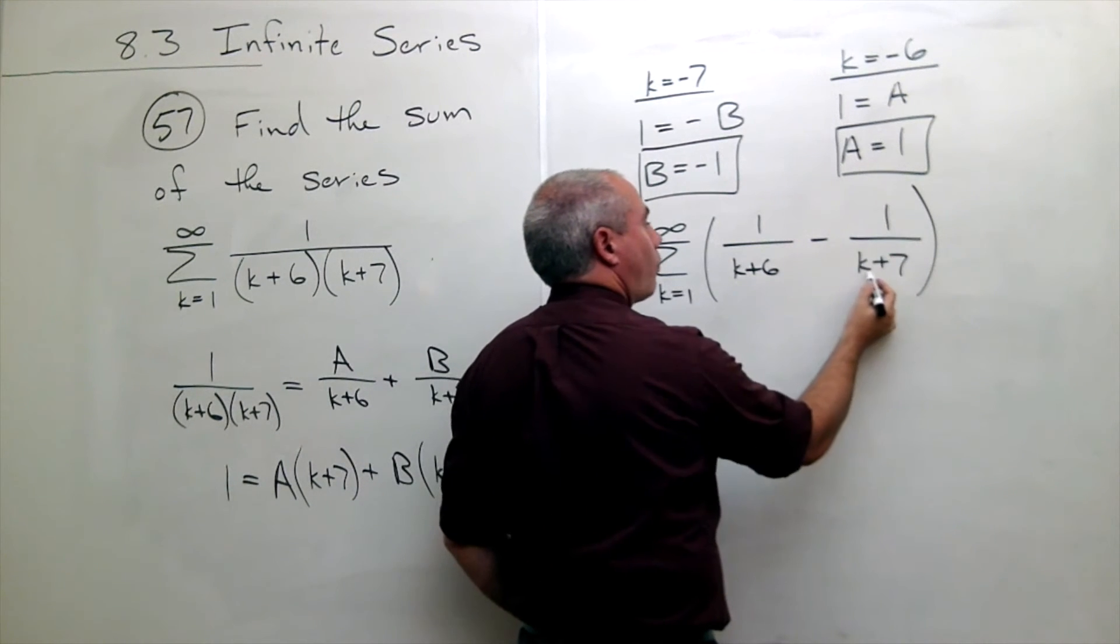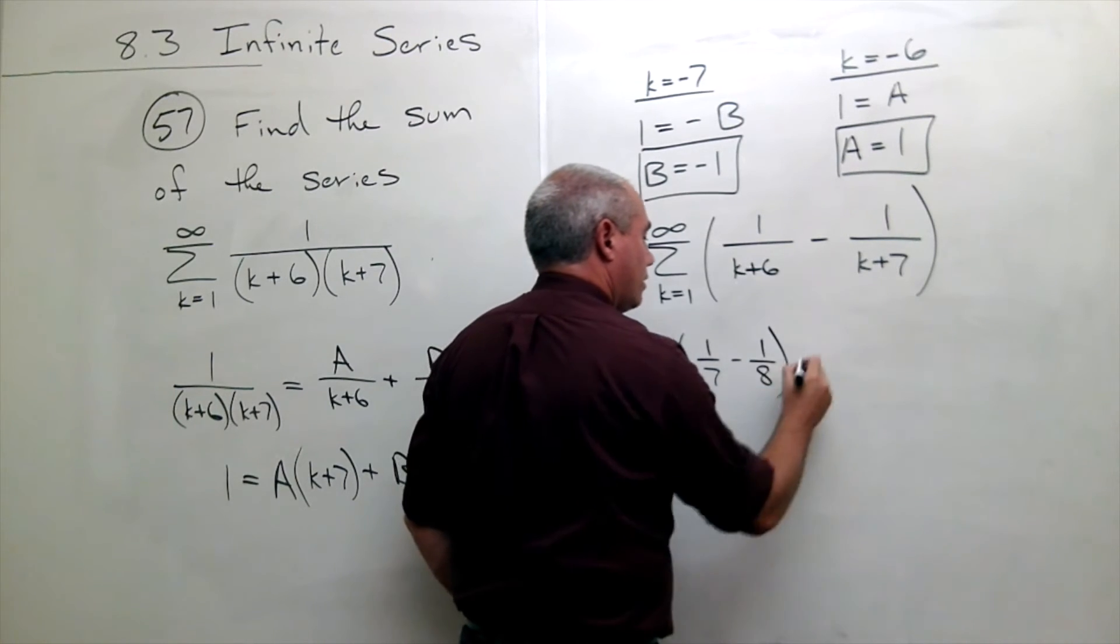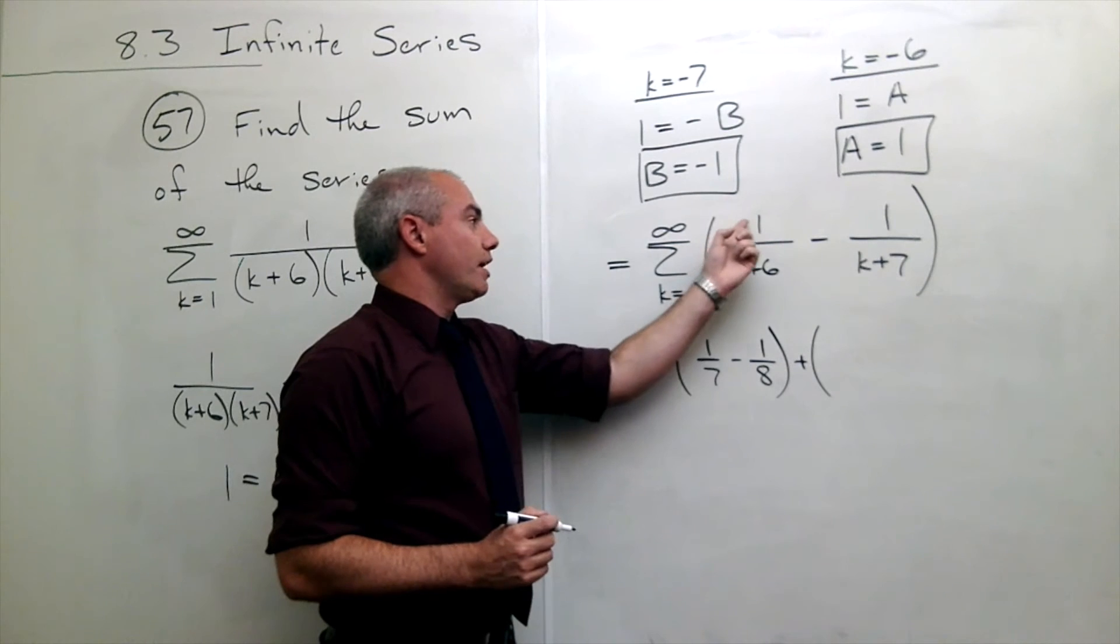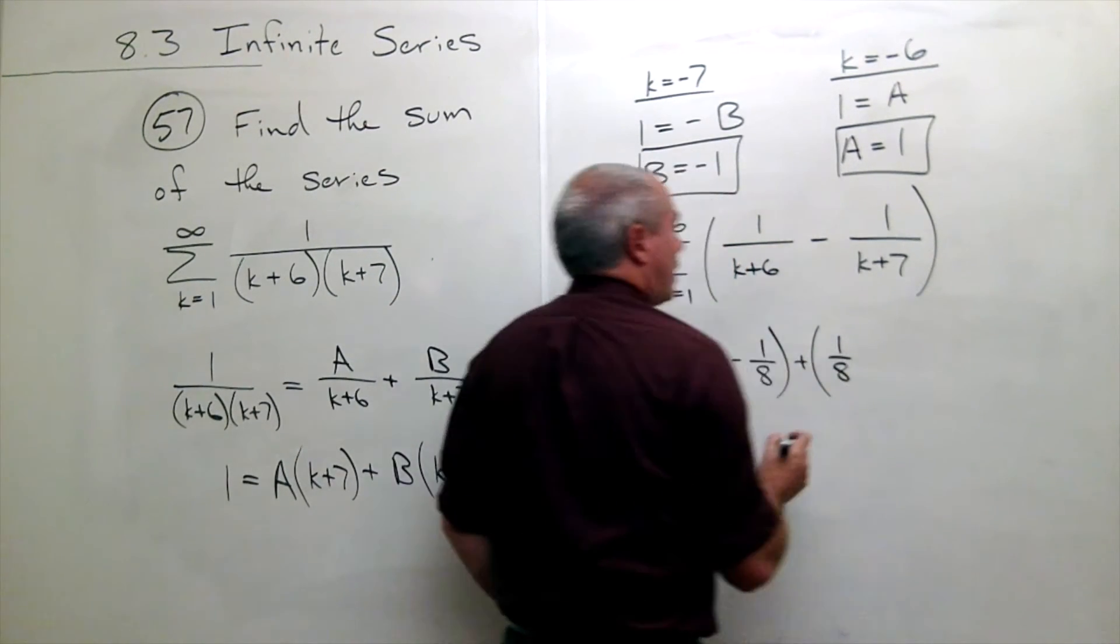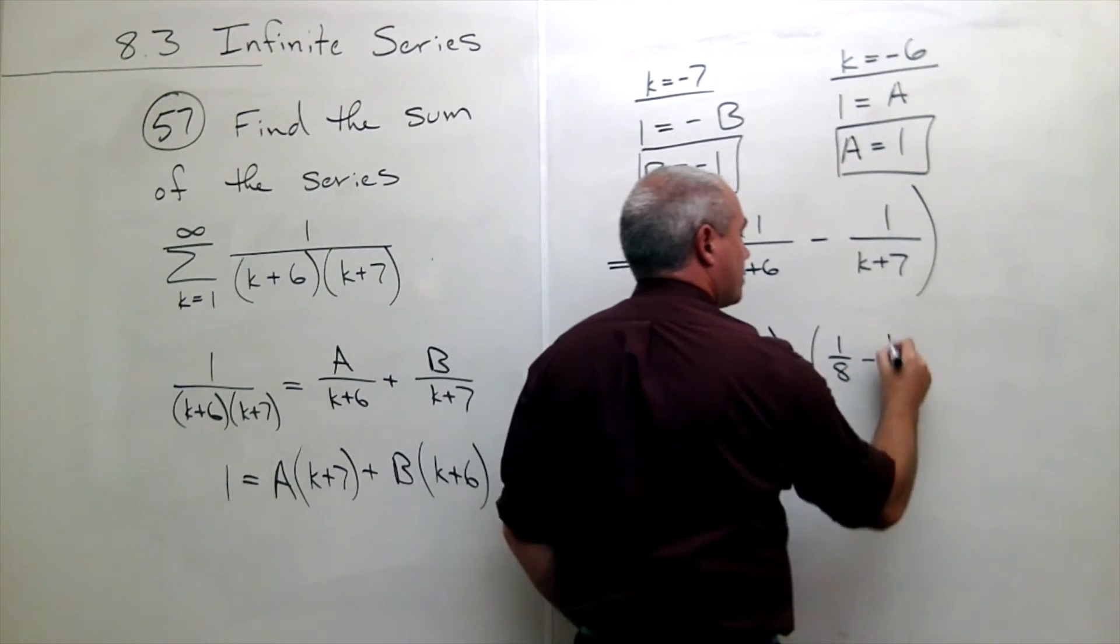And then I get minus 1 over 1 plus 7 which is minus 1/8. Plus if k were 2 then I get 1 over 8, and minus 1 over 9.